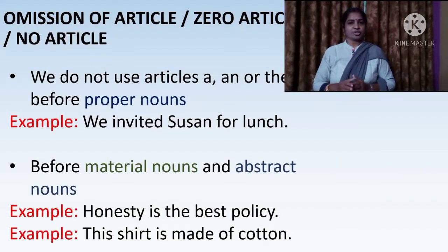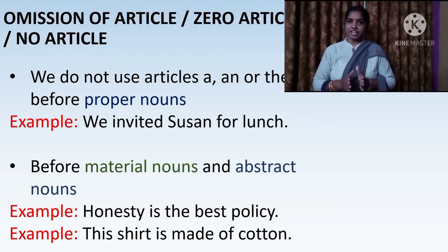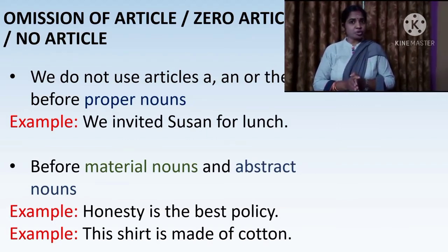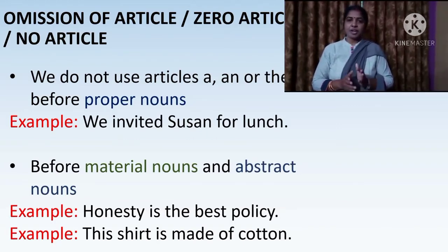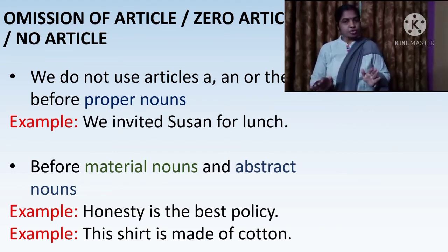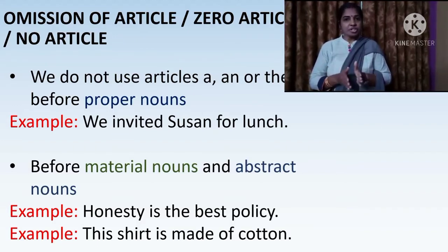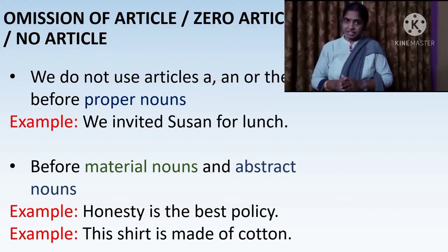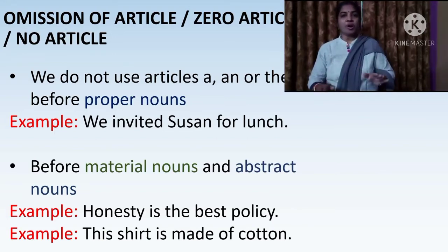So we have learned the uses of 'the', and in yesterday's class we learned the uses of 'a' and 'an'. Now, these articles — a, an, and the — are sometimes not used in sentences. Then we call this the omission of article, zero article, or no article.